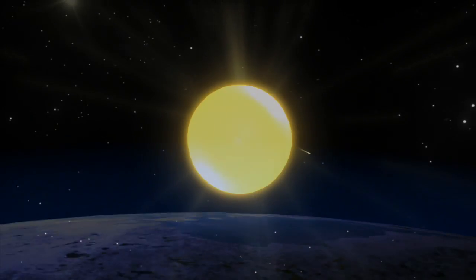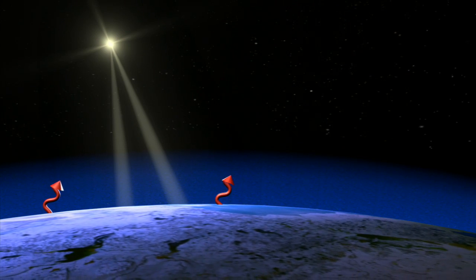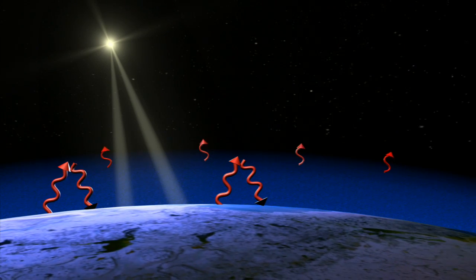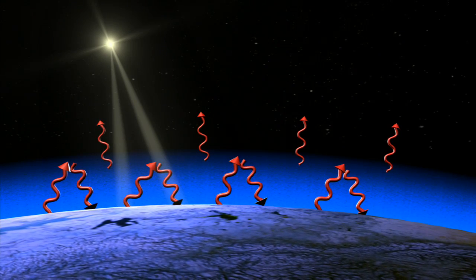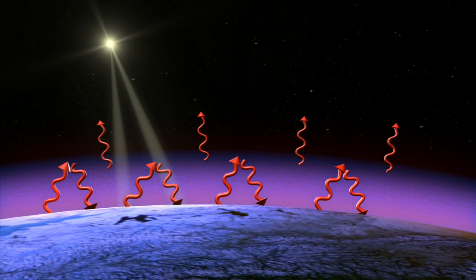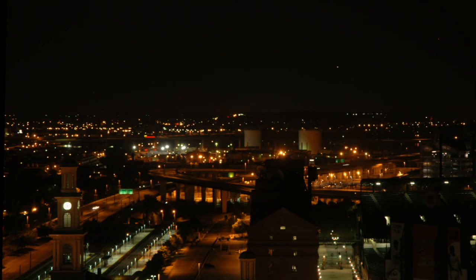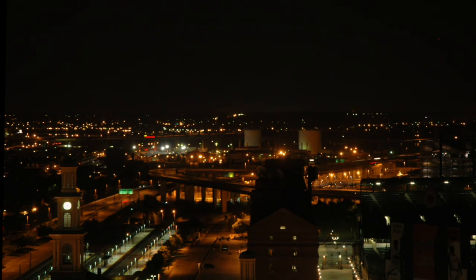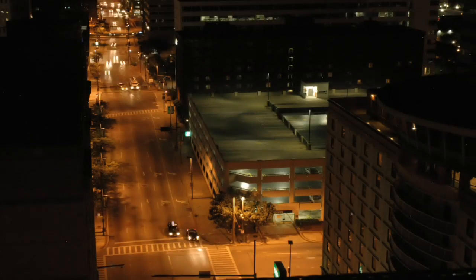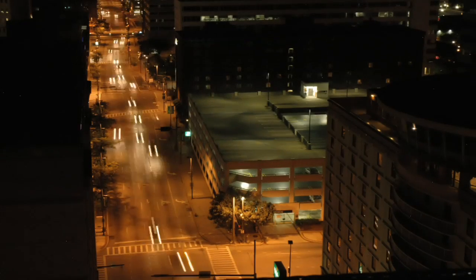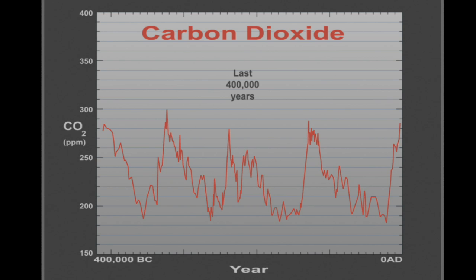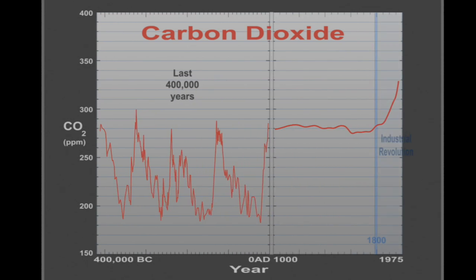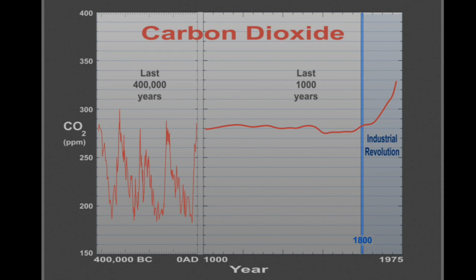At the most basic level, the balance between incoming sunlight and outgoing heat determines the Earth's climate. Greenhouse gases act like a blanket and trap heat in the atmosphere. Carbon dioxide is a greenhouse gas. In the past two centuries, humans have increased atmospheric carbon dioxide by more than 30% by burning fossil fuels and cutting down forests. The Earth has not experienced carbon dioxide levels this high for the past several million years.